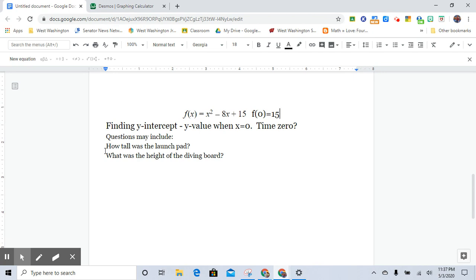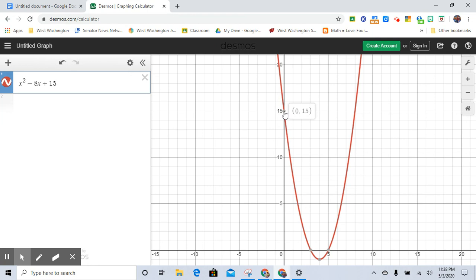And so the questions may include, how tall was the launch pad? If we're sending a rocket off, what was the initial height of the launch pad? What was the height of the diving board if we're looking at a diver? And so this is going to be the c value in the equation ax squared plus bx plus c. So this is going to be our y value. And we can look at that on the Desmos right here. The initial value is at 0, 15. And so that means at time 0, it was 15 feet off the ground or whatever.